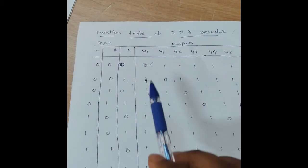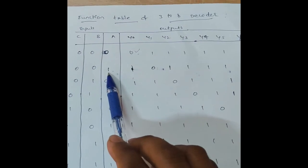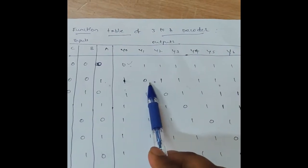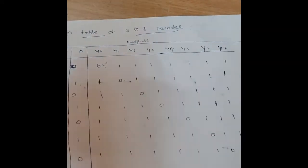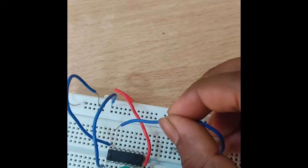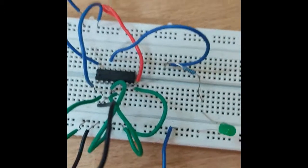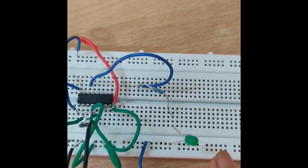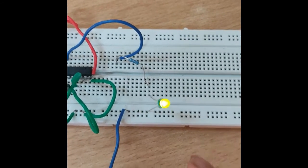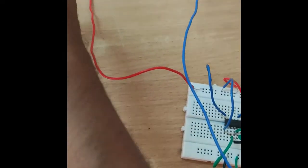For the next combination 0, 0, 1, Y1 is 0 and remaining all are 1. The Y1 pin is the 14th pin. Counting from pin 16, 15, 14 — this is the 14th pin. Y1 is ON (output is 0), confirming that for this combination, except Y1, all remaining outputs are 1.